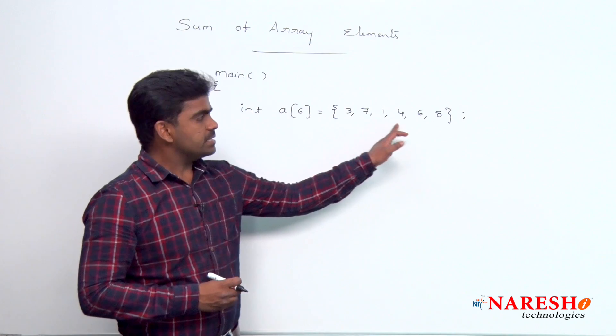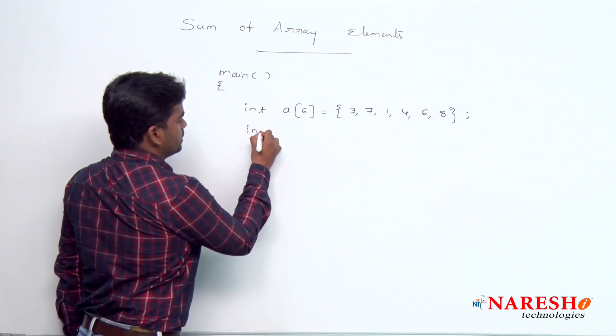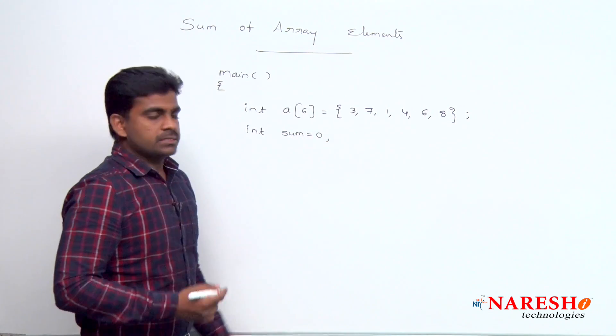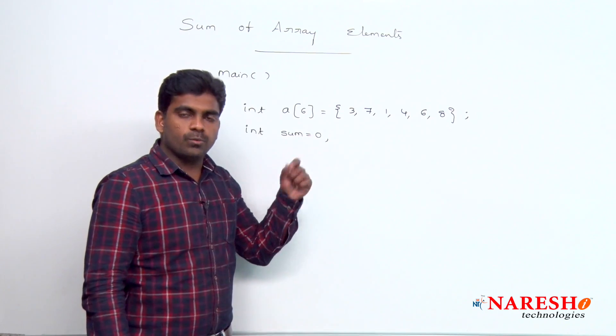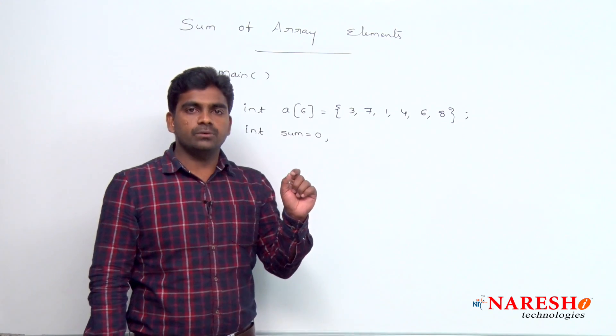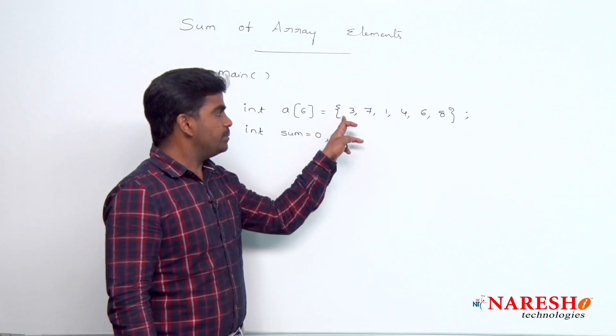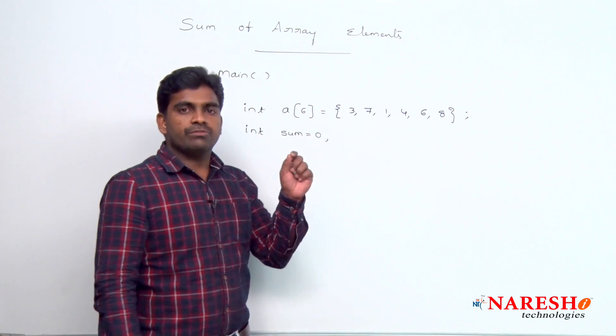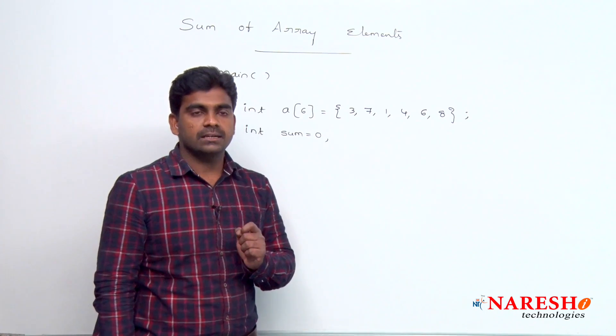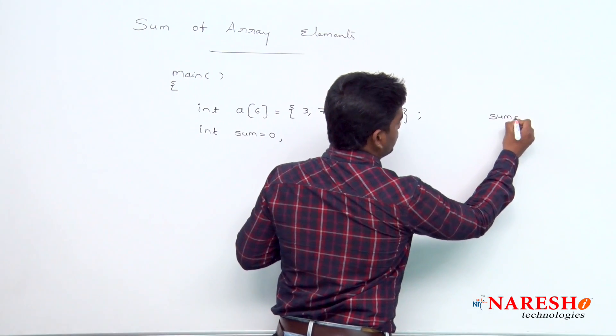Now, we need to add all these elements and finally we should display the sum. So here we are declaring one variable sum and initial value is 0. For example, if you are not initializing with 0, what will happen? If you are not initializing with 0, that local variable default value is a garbage value. So whenever we are adding the elements, the elements will be added to garbage value. Finally, the output is another garbage value. So that is the reason initially we are initializing sum value with 0, sum equal to 0.